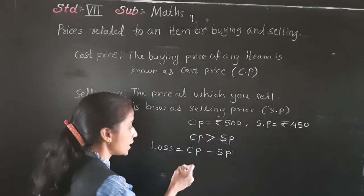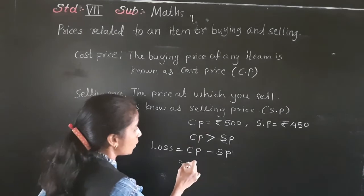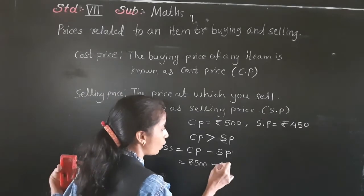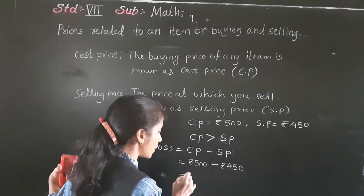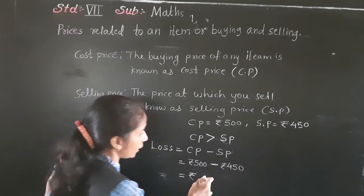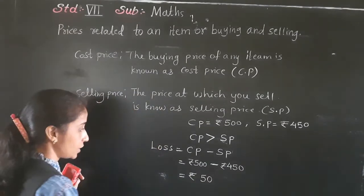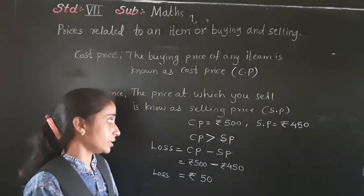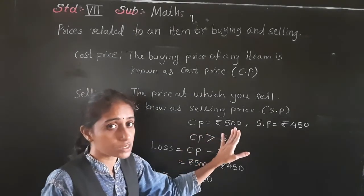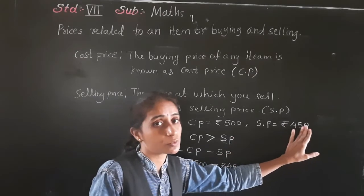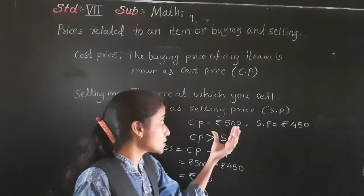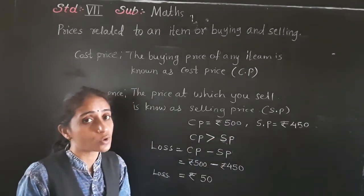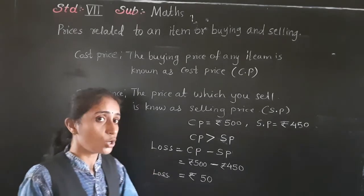The formula for loss is: loss equals cost price minus selling price. Cost price is 500 rupees and selling price is 450 rupees, so 500 minus 450 gives loss of rupees 50. When cost price is more than selling price, it is a loss.